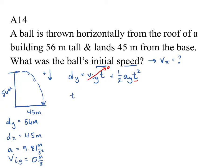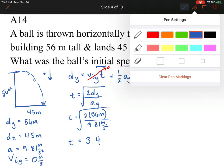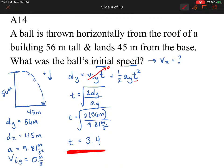Solving for time, when we rearrange and plug in those numbers — displacement of 56 m and acceleration of 9.81 m/s² — we get 3.4 seconds. So there's the time I'm going to use to help find the velocity in the X direction. Remember, I'm writing down 3.4 seconds, but when I actually calculate the velocity in X, I'll use the full unrounded number from my calculator for accuracy.